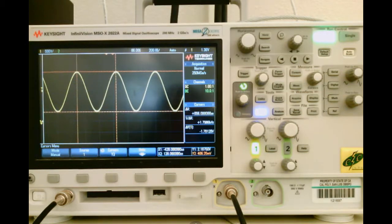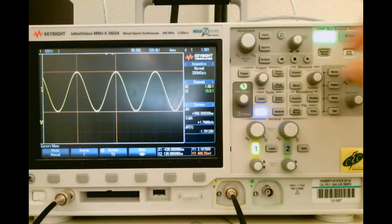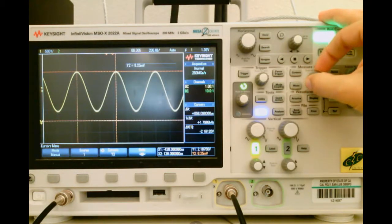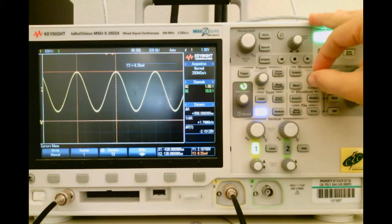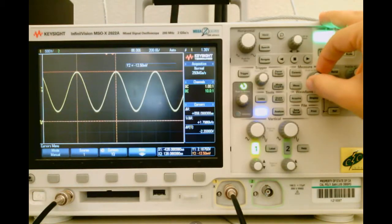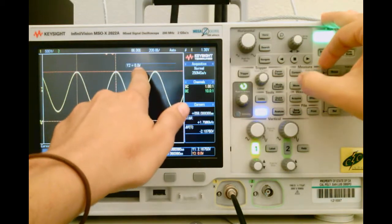So this allows me to get a much better measurement. If I want to get the offset, I can put one of my Y cursors down to ground. So as you can see, Y2 is lined up with ground, and you can see on this menu as well, I can line it exactly up with 0 volts.